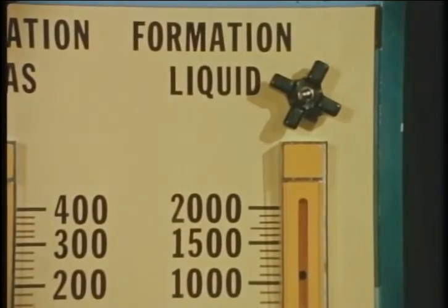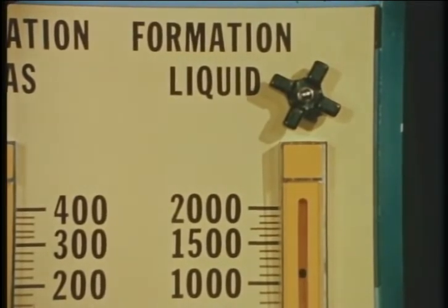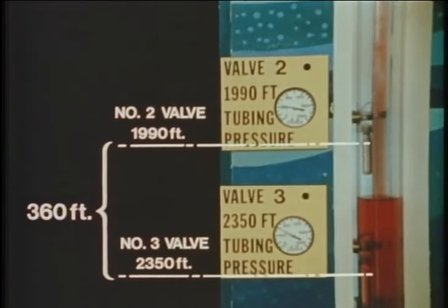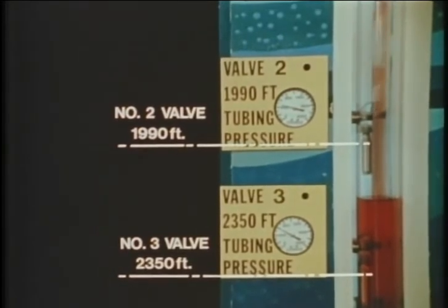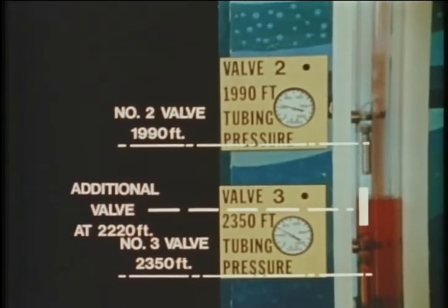We can note that the liquid production lifting from the number two valve at 1,990 feet is 1,100 barrels per day. Yet we know this well is capable of 1,400 barrels per day if we could lift from the number three valve at 2,350 feet, if proper valve spacing had been used. In our example, valve number two developed a maximum of 85 PSI differential, which was a little more than half of the 130 PSI required. An additional valve placed at 2,220 feet would allow the well to work to a lower level and achieve much higher liquid production.